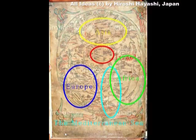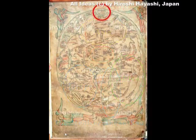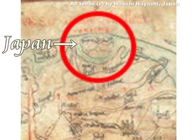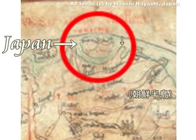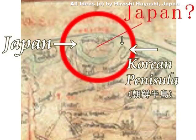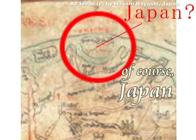もう一枚の地図で検証してみます。基本的には同じ描き方です。この中央にエルサレムがあります。イスラエルですね。そして、ブルーの部分が地中海です。左にヨーロッパと表記してあります。グリーンの部分がアフリカ。そして上、黄色い部分がアジア大陸ということになります。そのアジア大陸の東の果てに小さな島が描かれています。